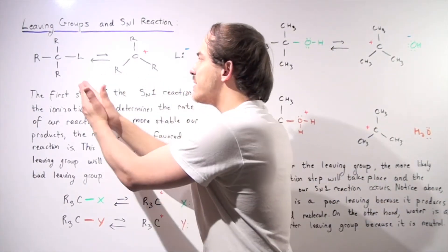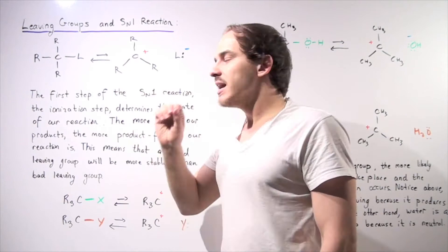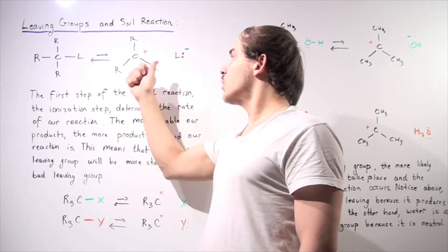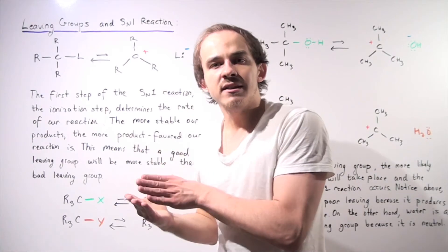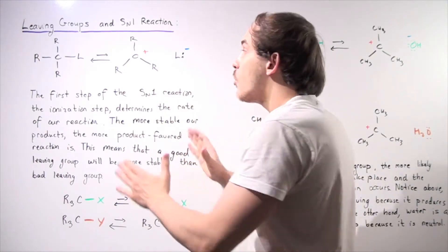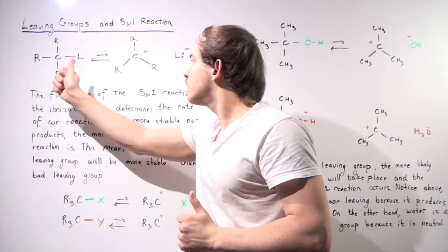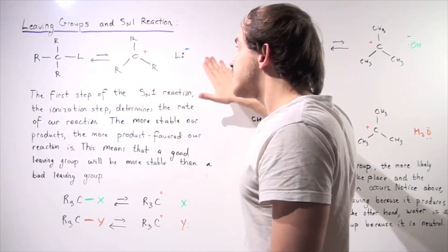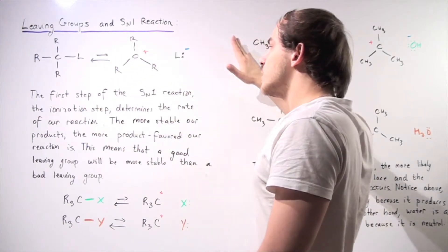Now let's examine stability. How do we know in which direction our reaction takes place — does it go forward or in reverse? In order to answer that question, we have to examine the stability of our products versus our reactants. The more stable our products, the more likely our reaction will take place from left to right, from reactant side to product side, and the further to the right our equilibrium lies.